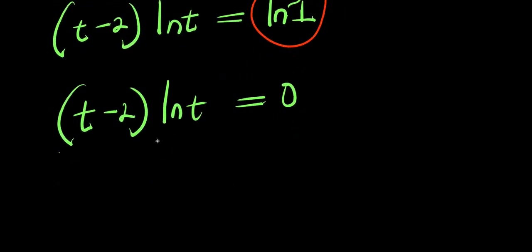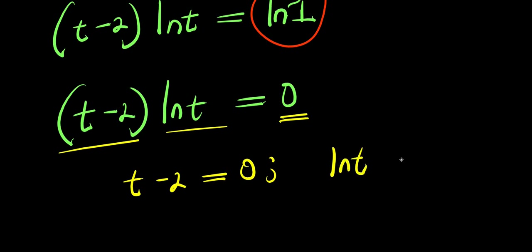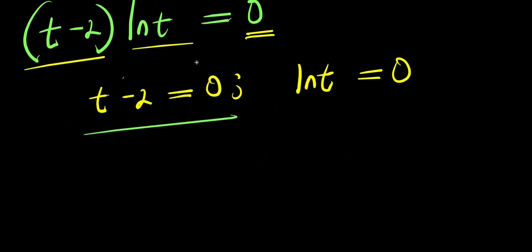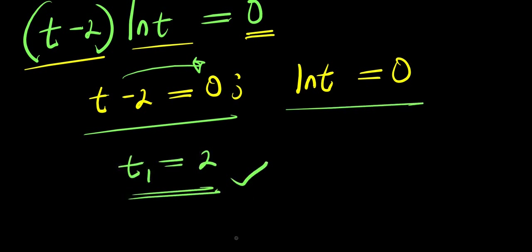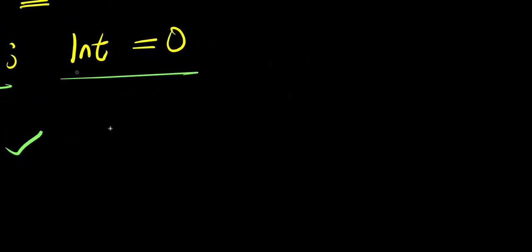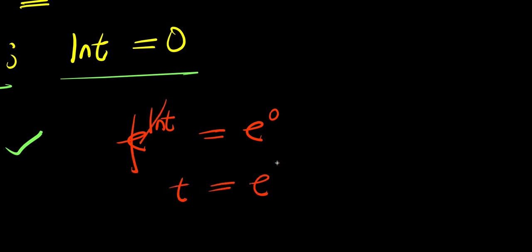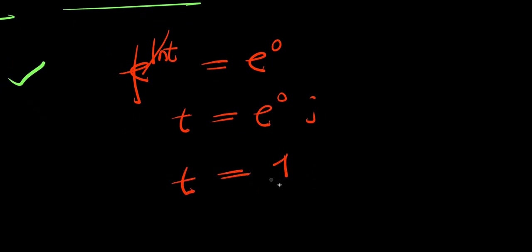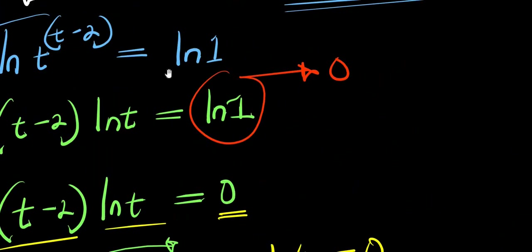To solve this equation I need to equate each factor to 0. I have t minus 2 equals 0, and I also have natural log of t equals 0. From t minus 2 equals 0, I move the 2 over and get t equals 2 — that is t₁. For natural log of t equals 0, I apply e: e to the power of natural log of t equals e to the power of 0. The e and natural log cancel, giving t equals e to the power of 0, and e to the power of 0 is 1. So t equals 1. We now have two values: t equals 1 and t equals 2.